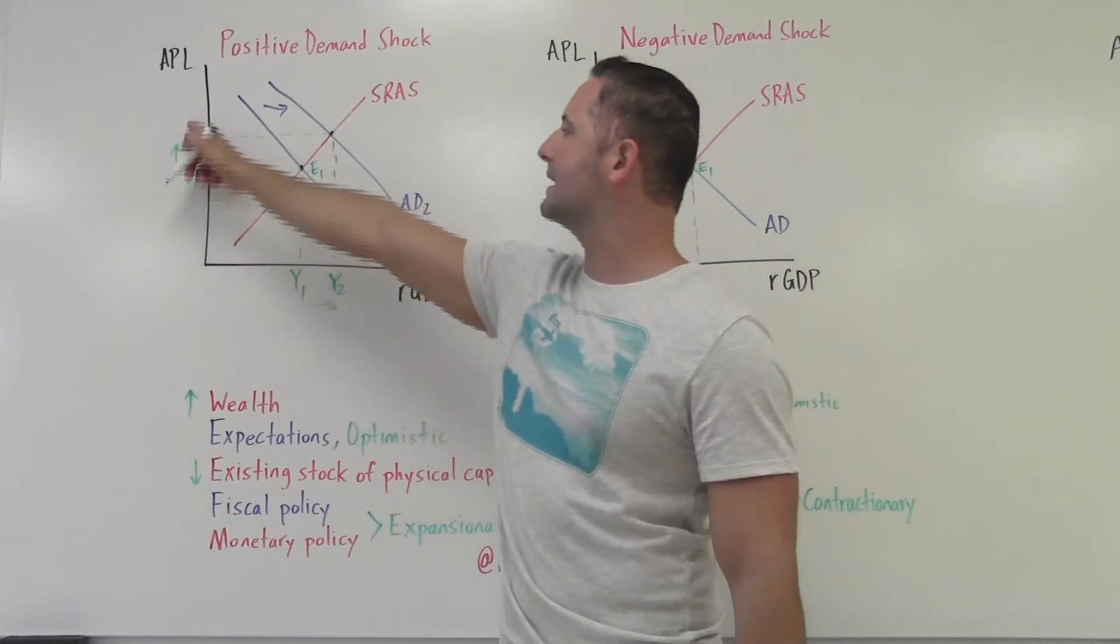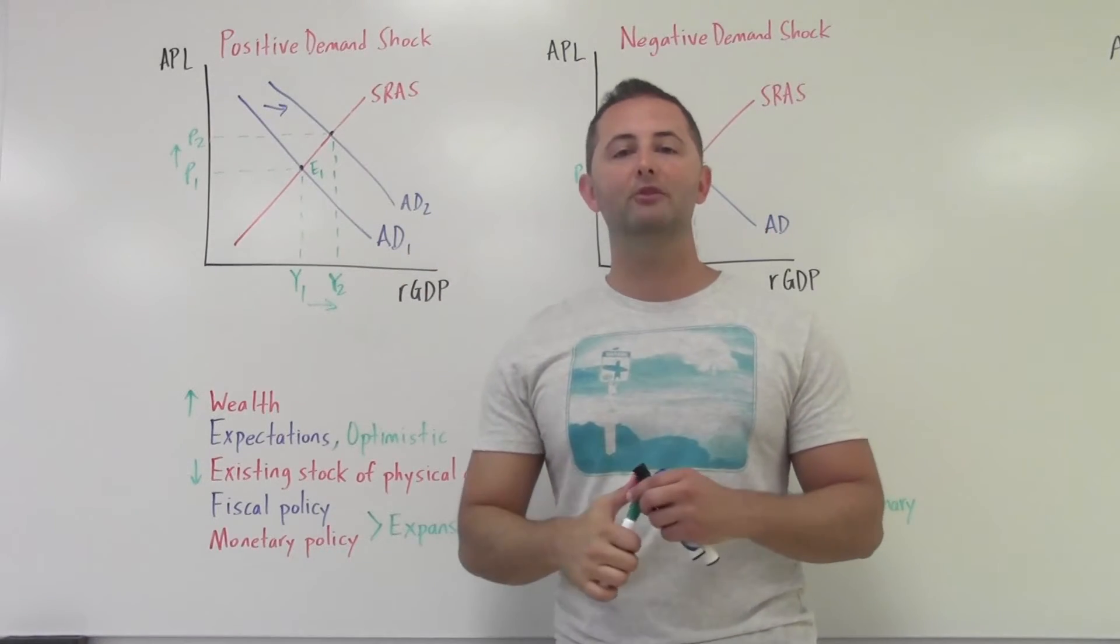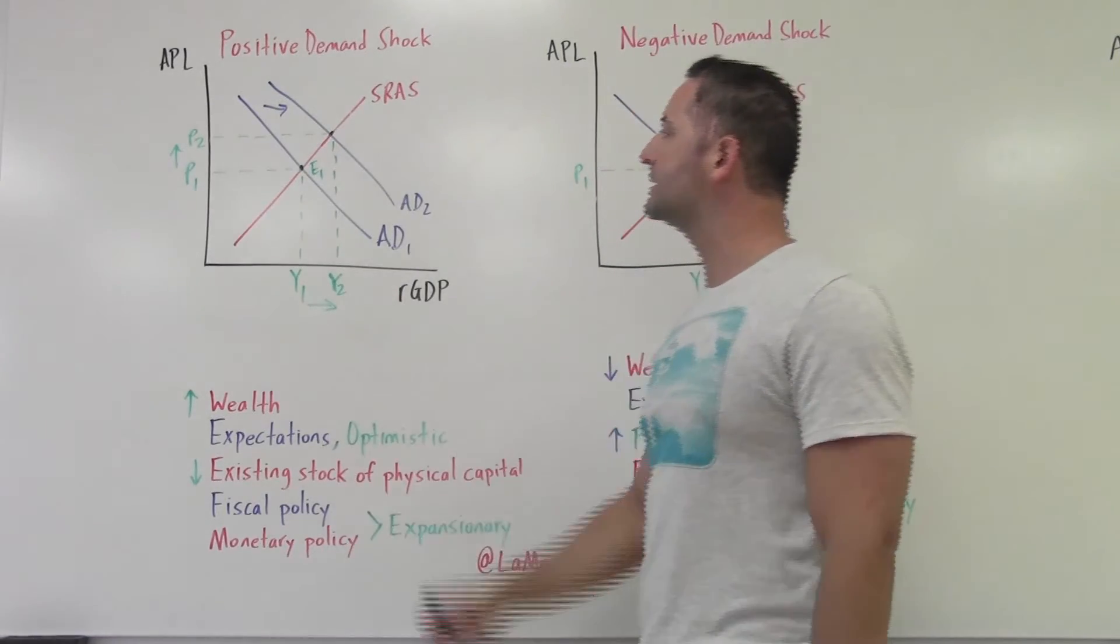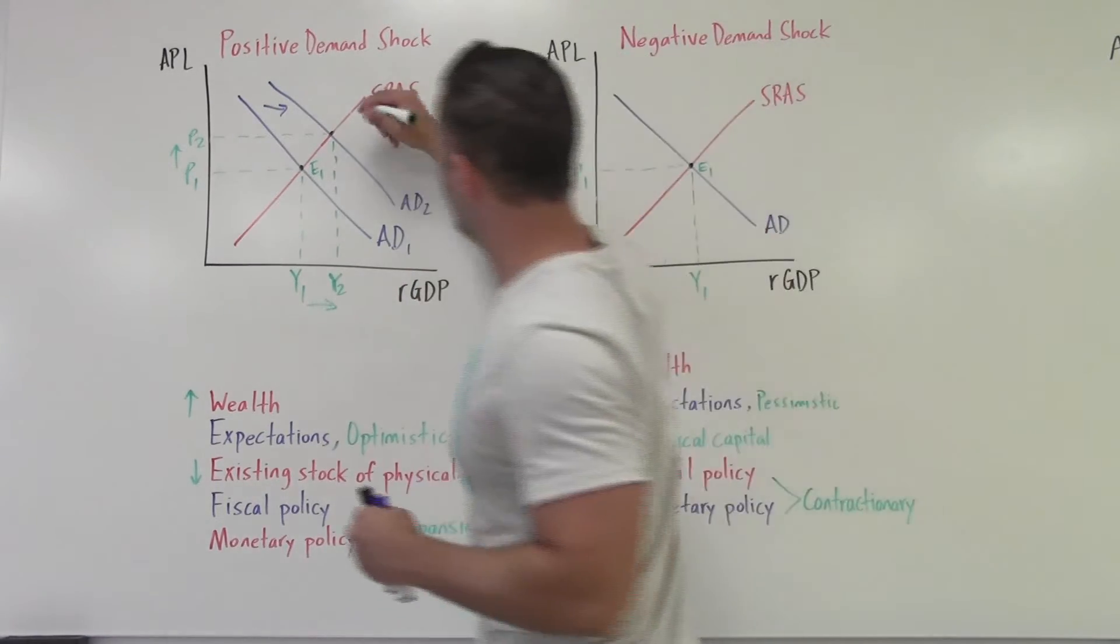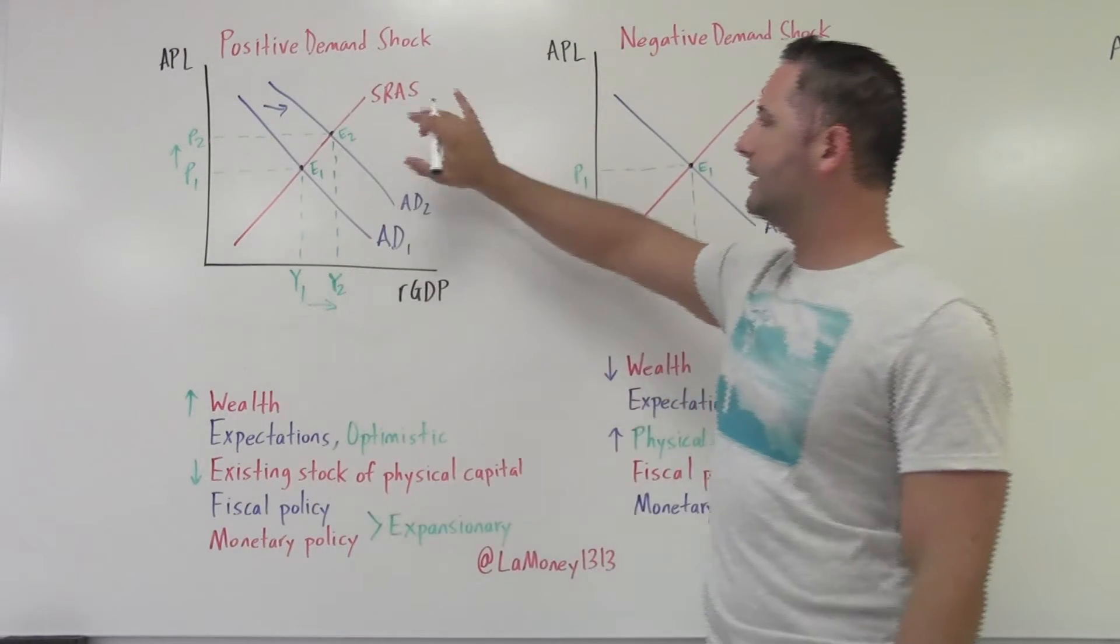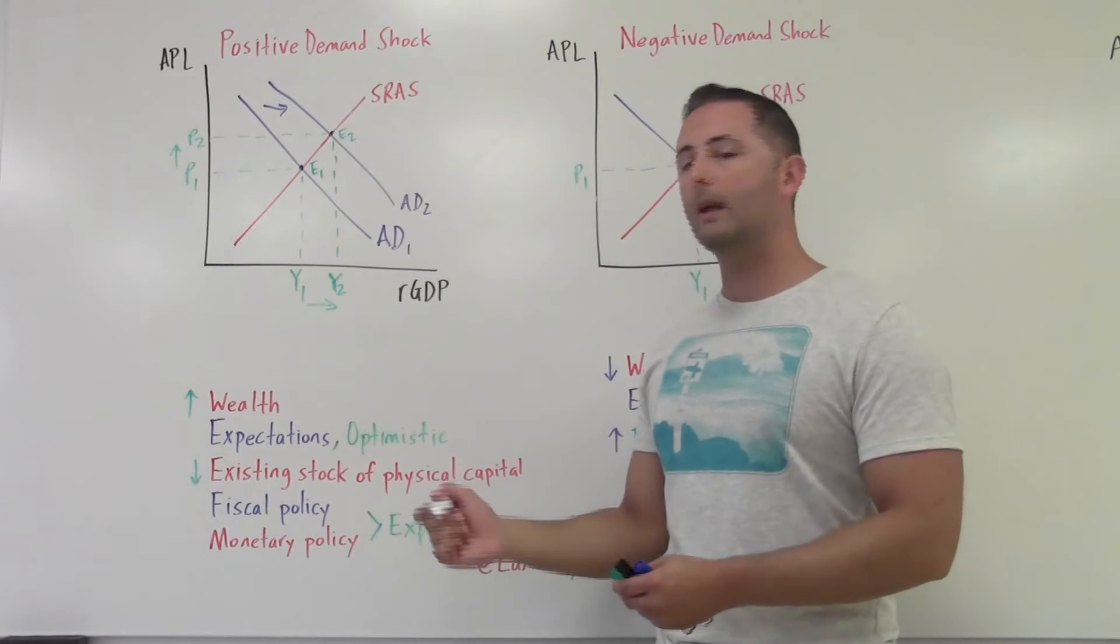So what has happened to output and to price level? Well, as we can see, price level increased and so did output. So when we have a positive demand shock, both output and price level increase, which is what we see here. Let me just label that E2. That's the only thing I'm missing there. And so that's what our model of a positive demand shock is going to look like.